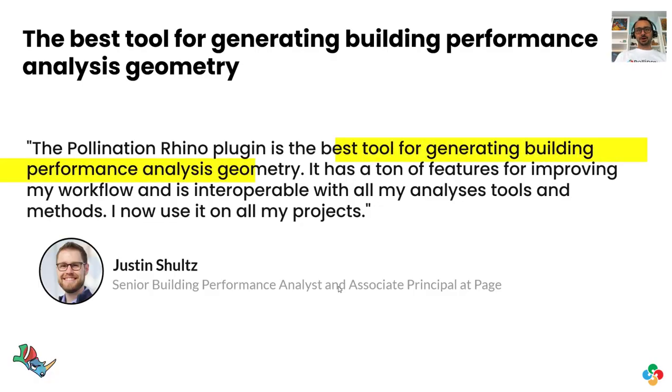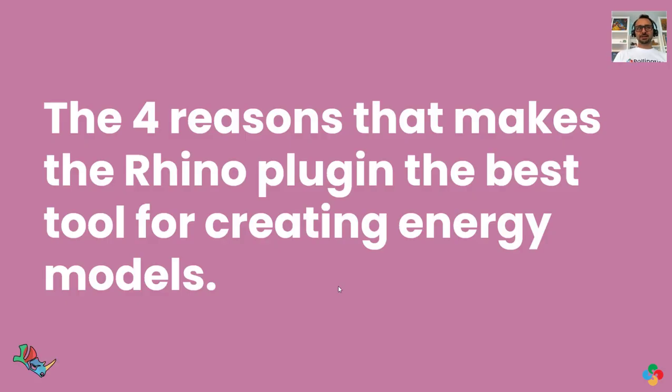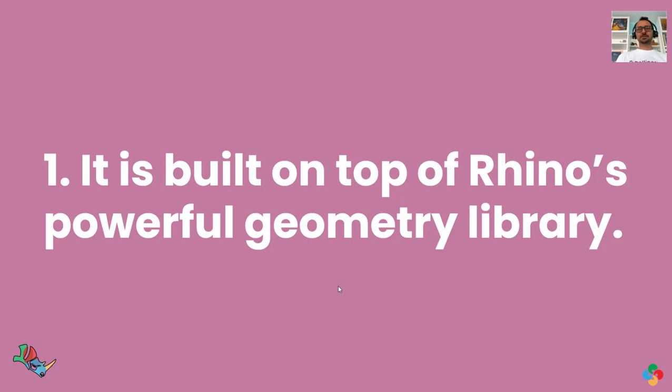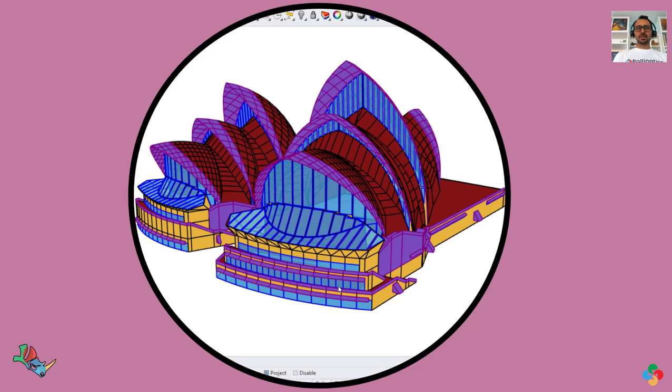And I'm not the only one who thinks you should. Pollination Rhino Plugin has unique features that makes it the best tool for generating building performance analysis geometry. These are the top four that I think makes Rhino Plugin the best tool for creating energy models. The first one is built on top of Rhino's powerful geometry library. That means you can build things like this and as a valid energy model.